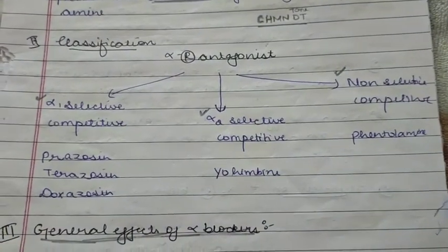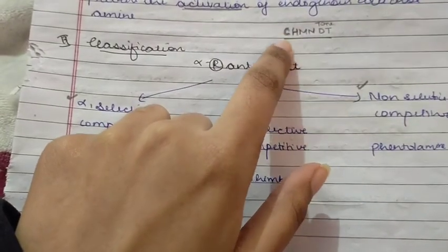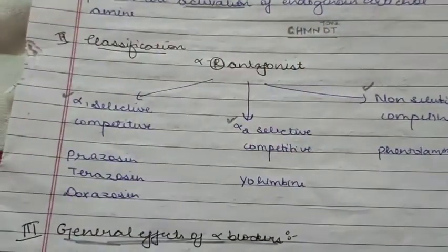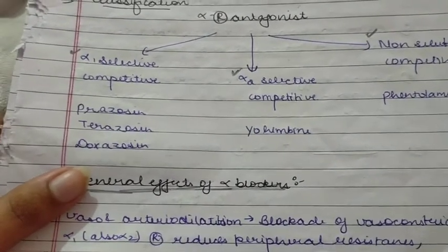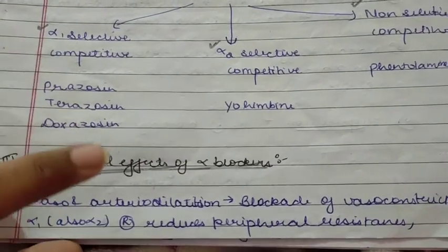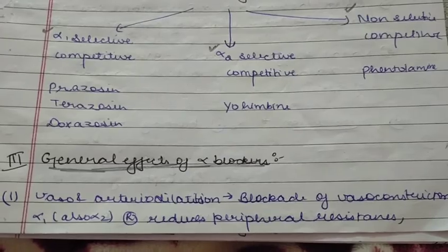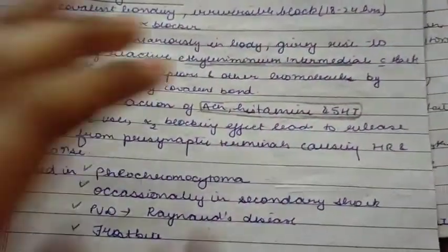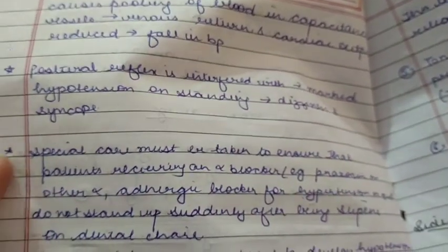The general effects of alpha-blockers — we will remember them through a mnemonic in case we forget. Going from one system to another: vascular arterial dilatation. They cause blockage of vasoconstrictors at the alpha-1 receptors, leading to a reduction in peripheral resistance, a reduction in cardiac output, heart rate, venous return, and then a fall in blood pressure.